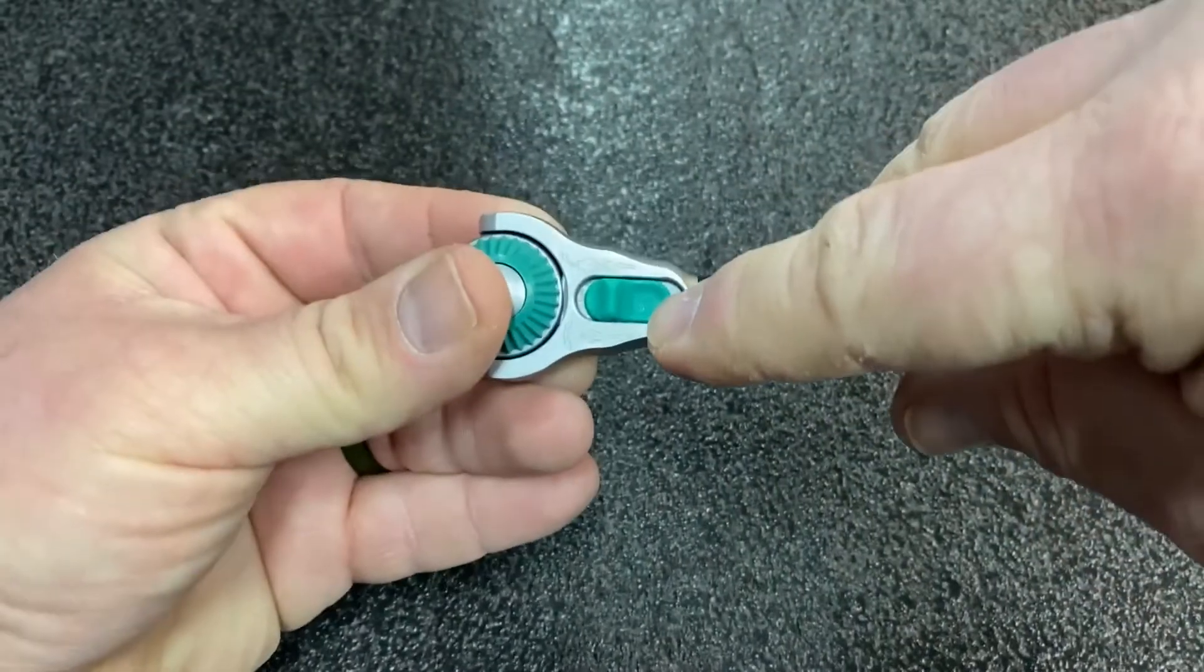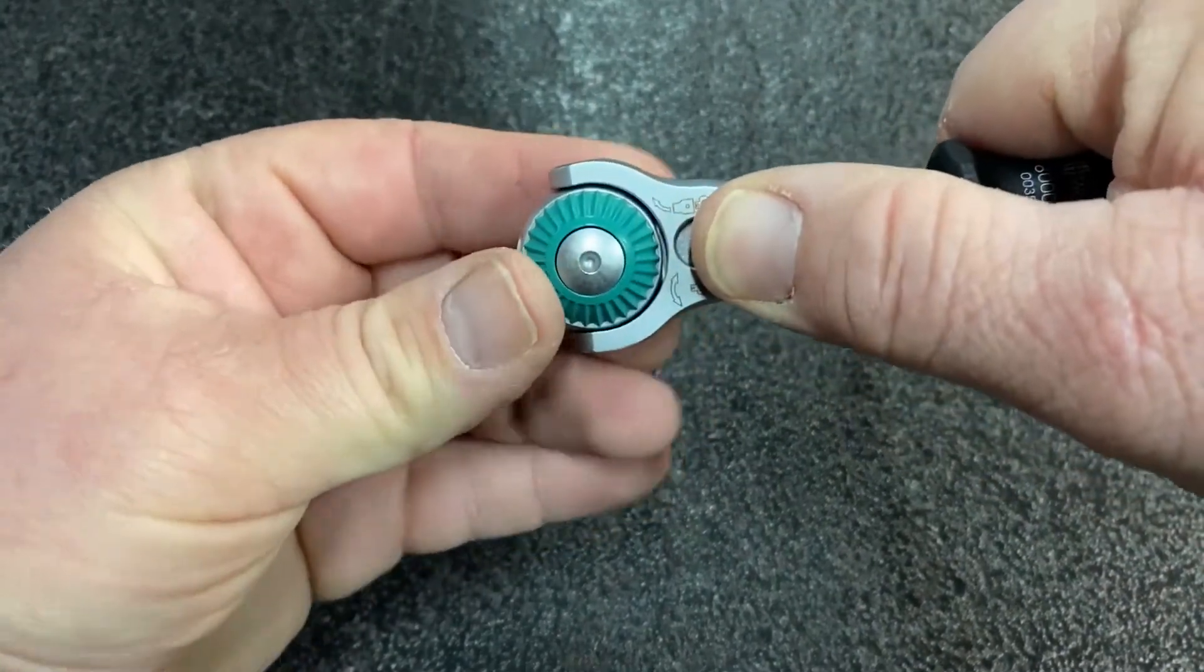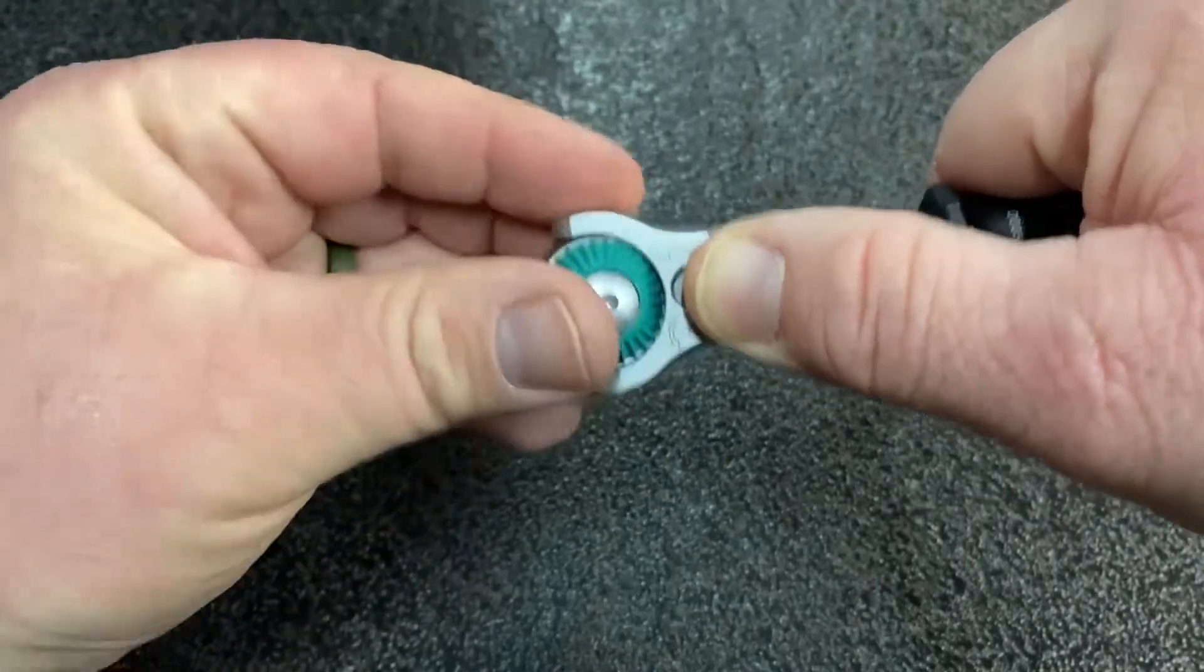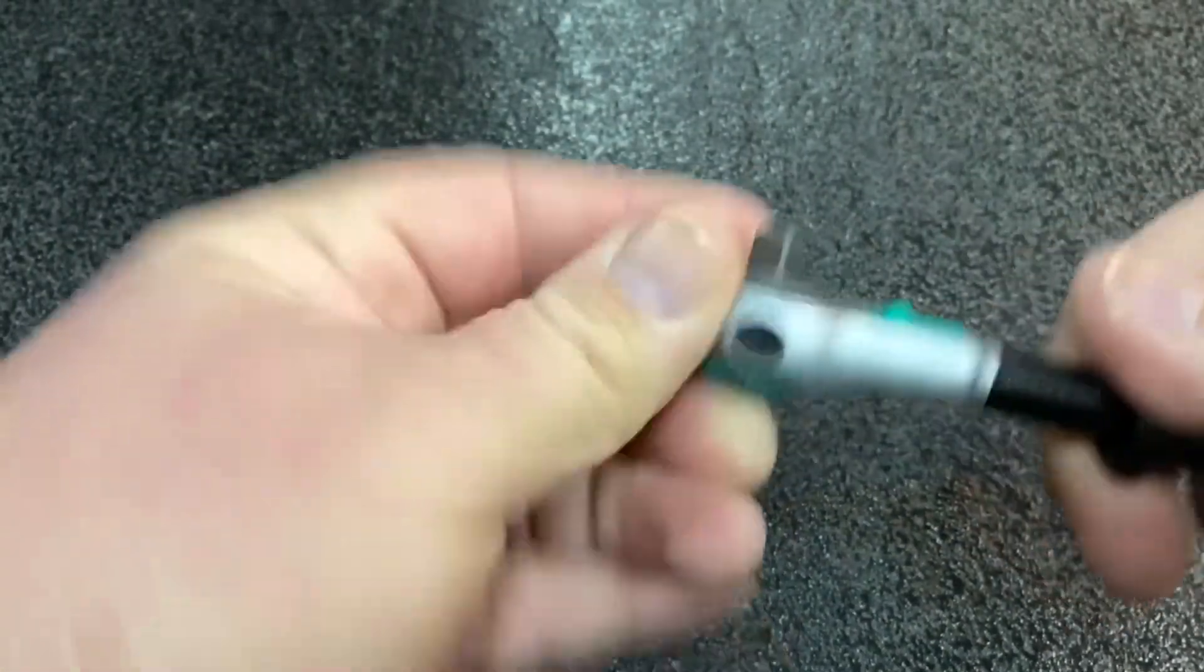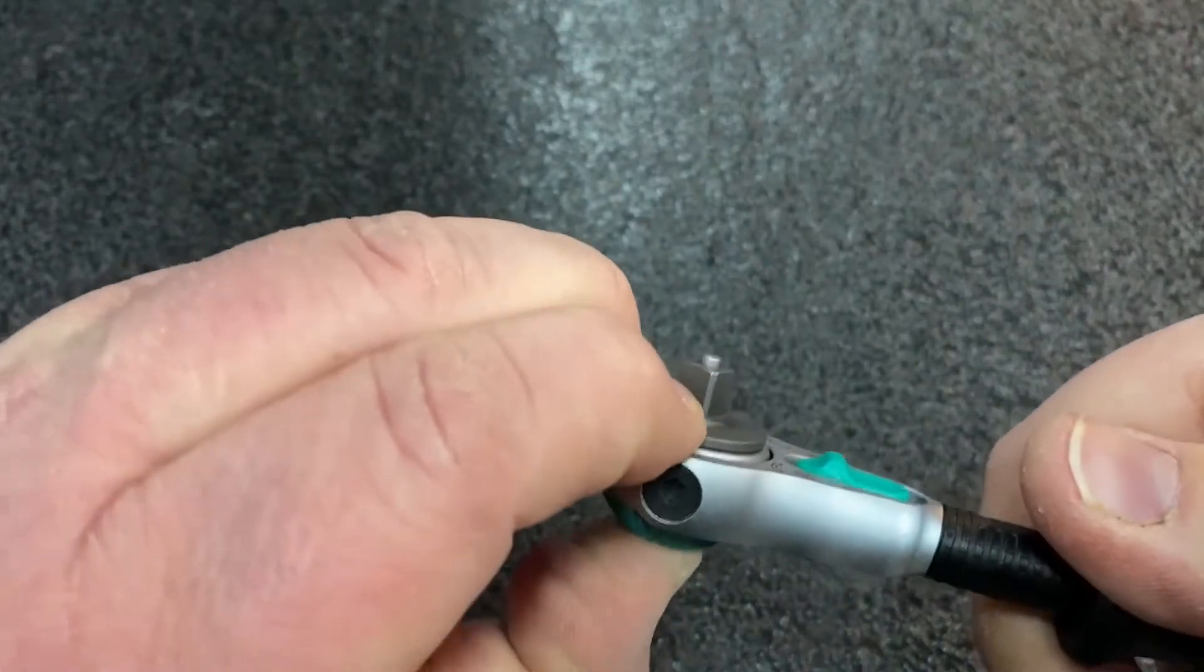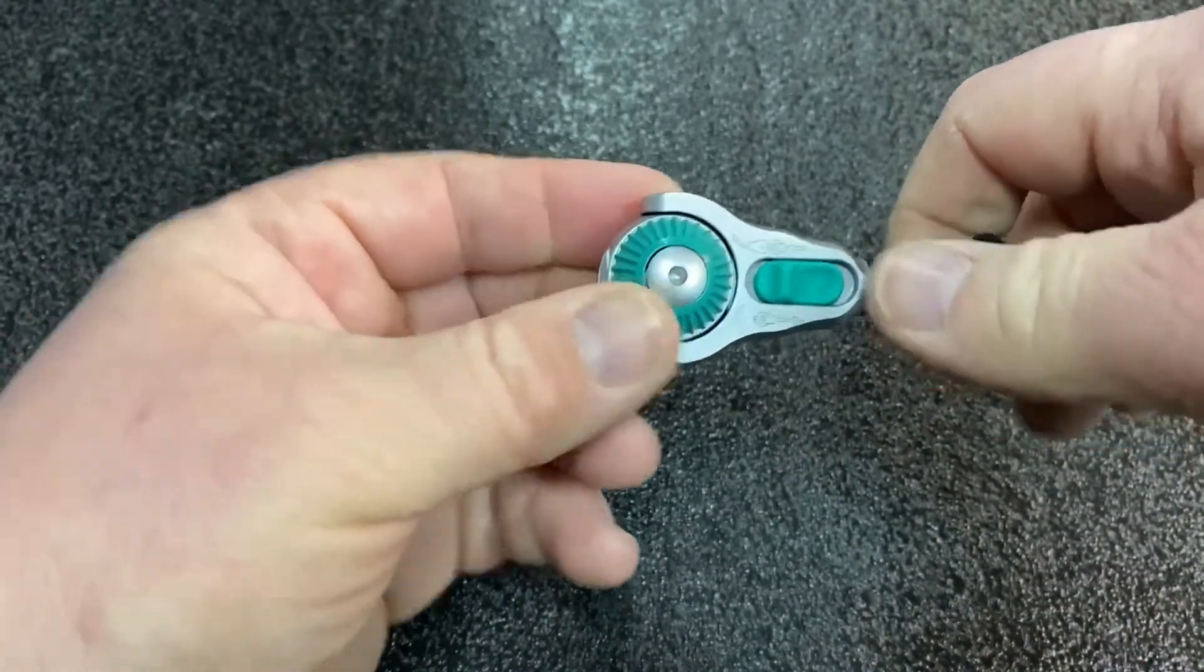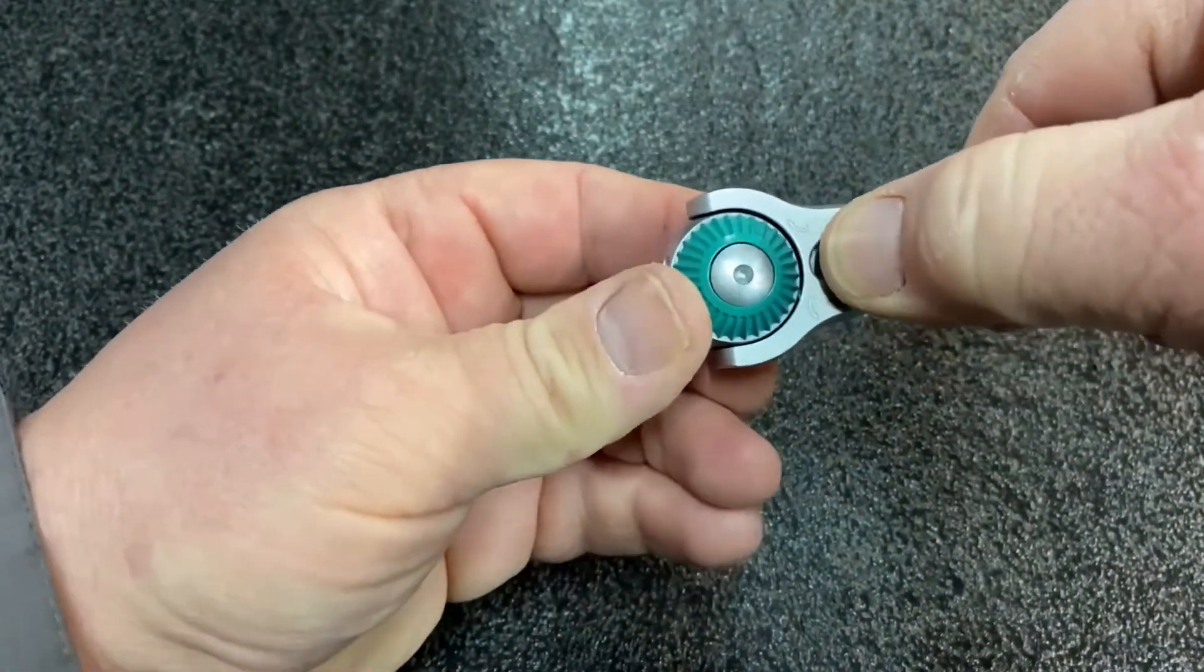This lever here that I'm moving lets you rotate the head. Notice this silver button is the socket eject button, and there's a detent in it. You flip this all the way to 90 degrees or straight on, and it locks in there.